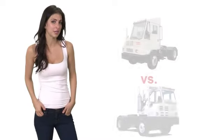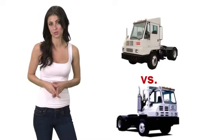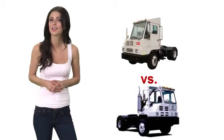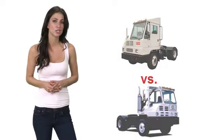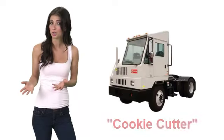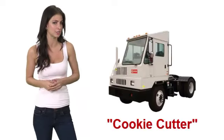Calmar and Capacity have been competitors over the past 25 years with similar products in appearance and functionality. Generally, Capacity's trucks tend to come with more standard options, while Calmar's trucks tend to be a cookie-cutter design.